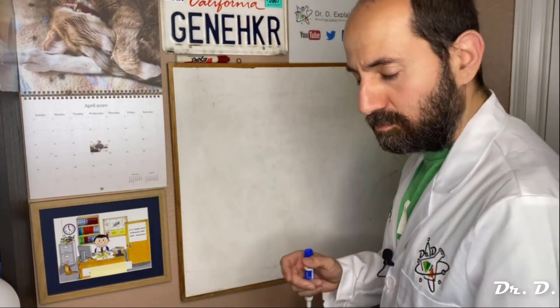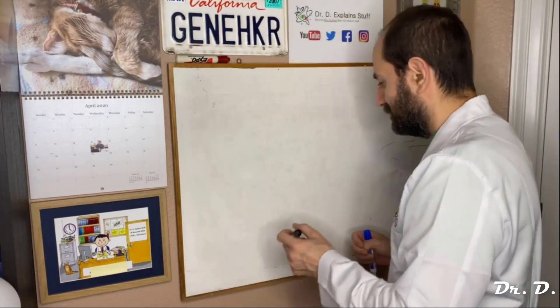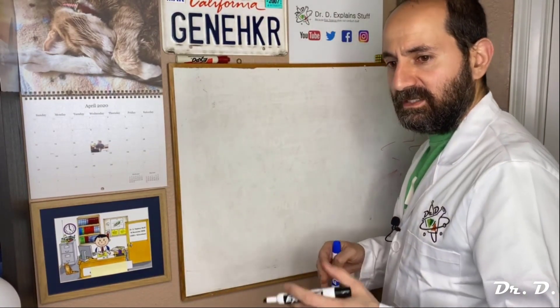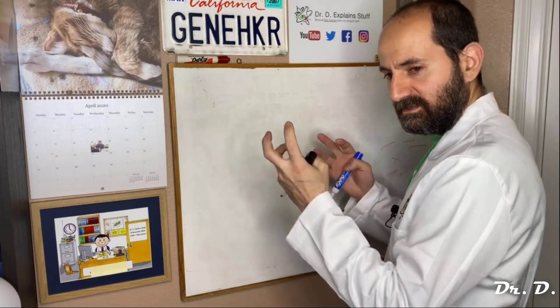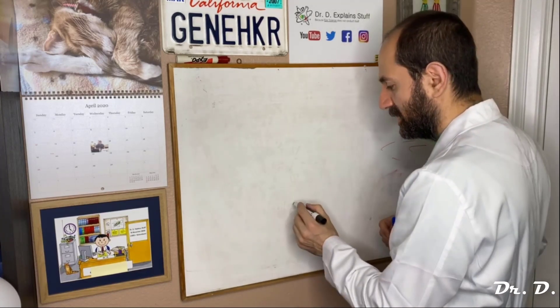Hi everyone, Dr. D here. In this video I'm going to explain what antibodies look like. Antibodies are proteins — they are actually four proteins together as a quaternary structure.